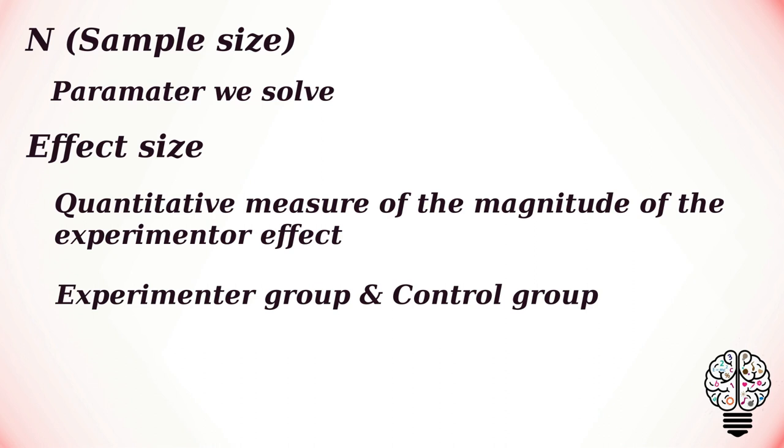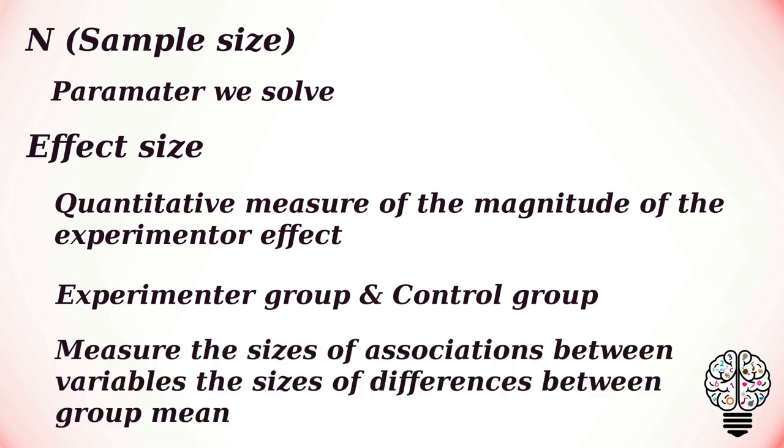The experimental group may be an intervention or treatment which is expected to affect a specific outcome. For example, we might want to know the effect of a therapy on treating depression. The effect size value will show us if the therapy has had a small, medium, or large effect on depression.